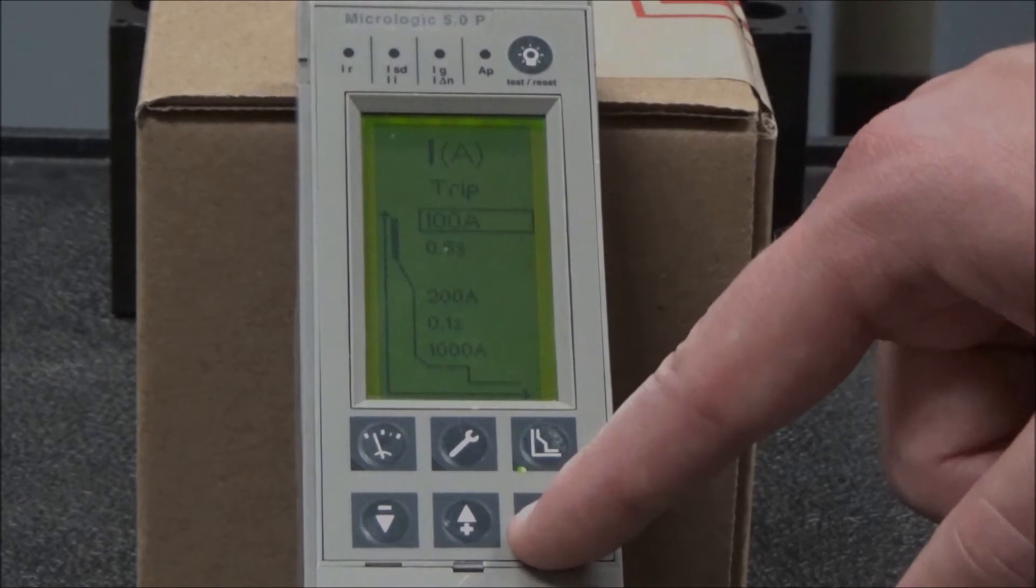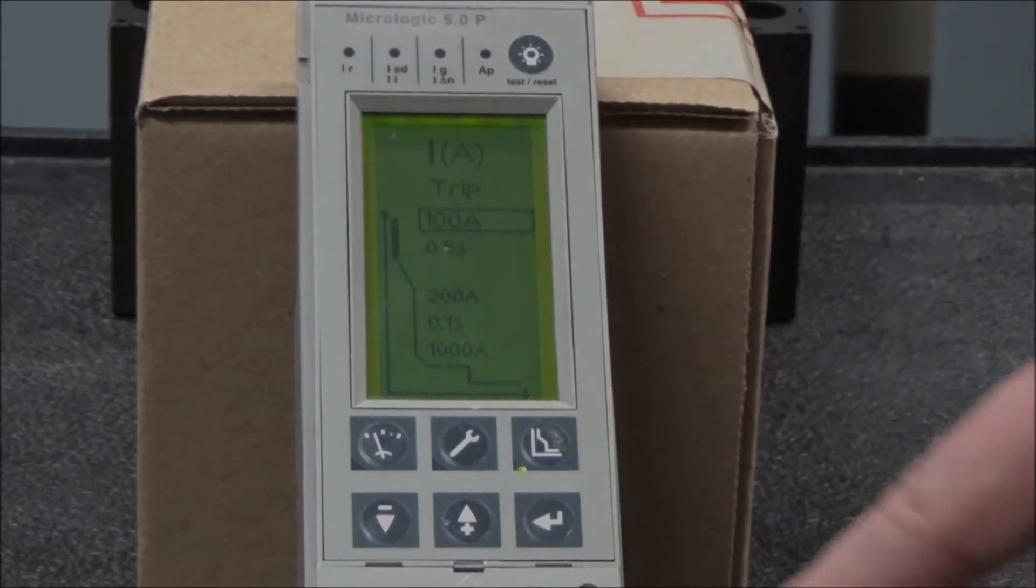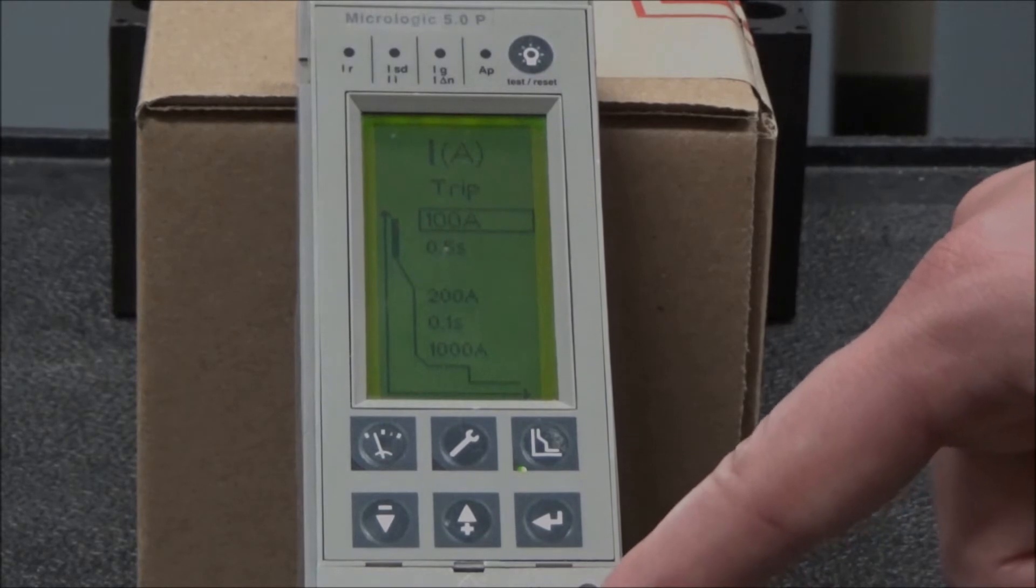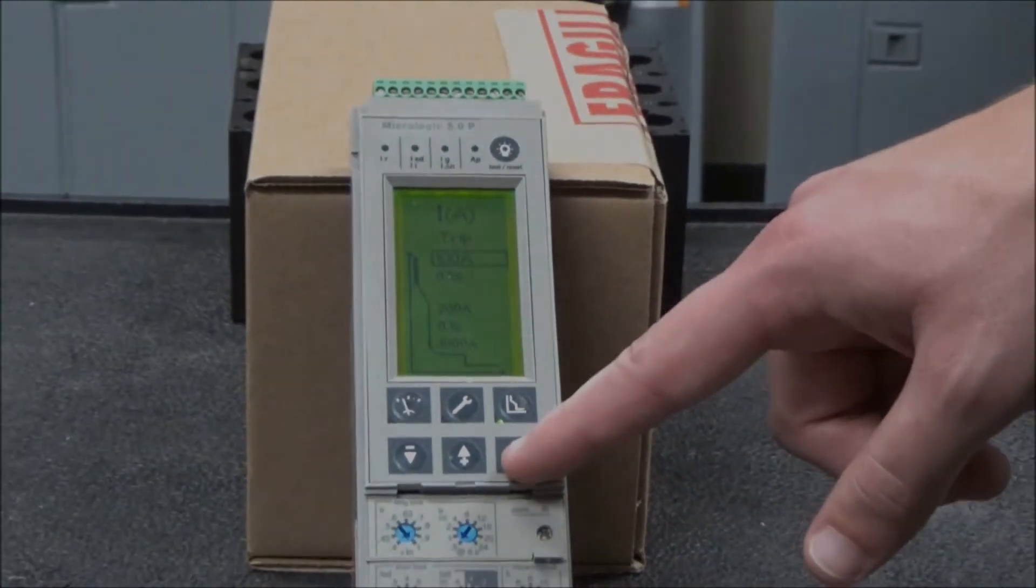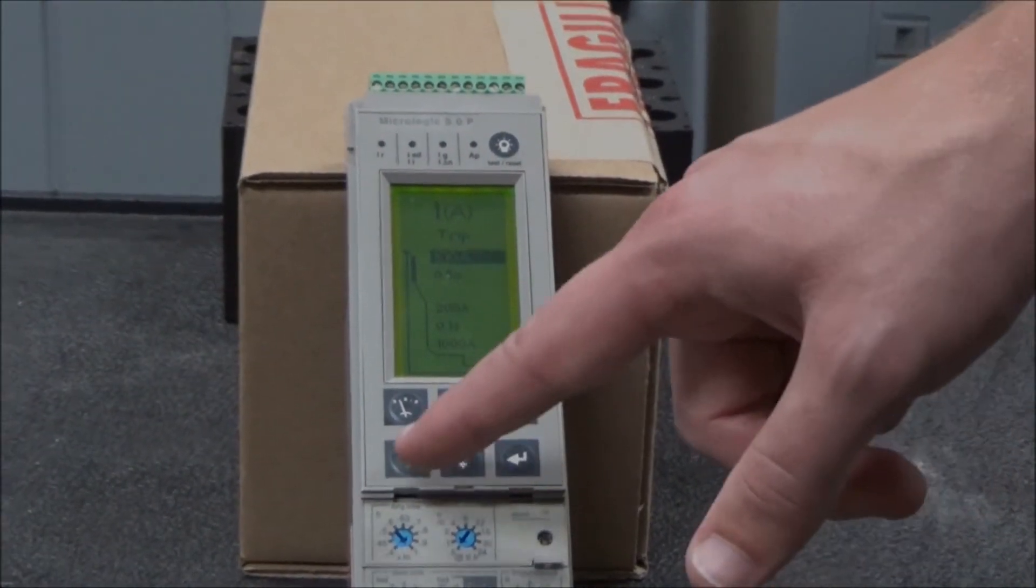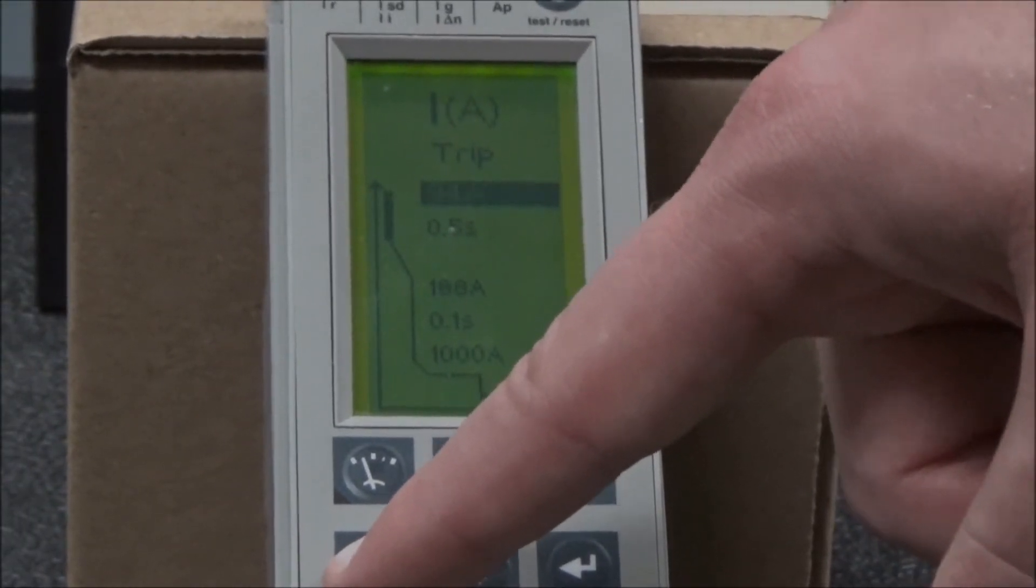Then you will see that you cannot select it because the trip unit door is closed. If you open the trip unit door, you can then select it and use the up and down arrow buttons to adjust the amperage.